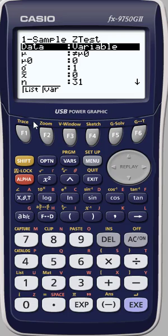If we have a list of data, we would choose F1 for list. Let's stick with variable.